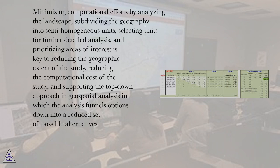Minimizing computational efforts by analyzing the landscape, subdividing the geography into semi-homogeneous units, selecting units for further detailed analysis, and prioritizing areas of interest is key to reducing the geographic extent of the study and reducing the computational cost of the study.